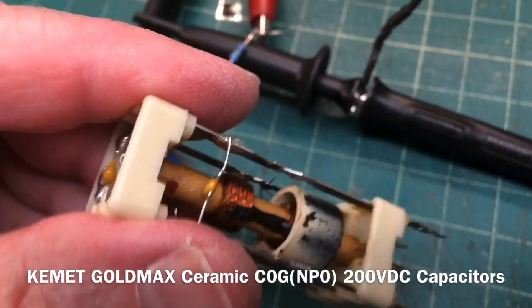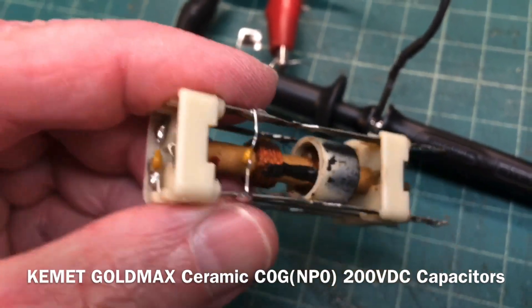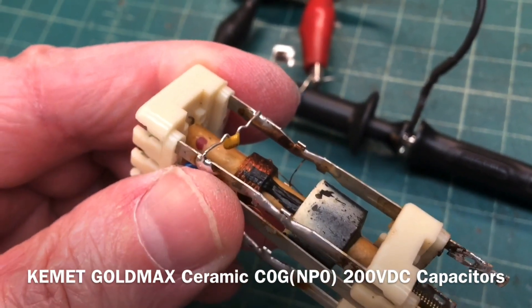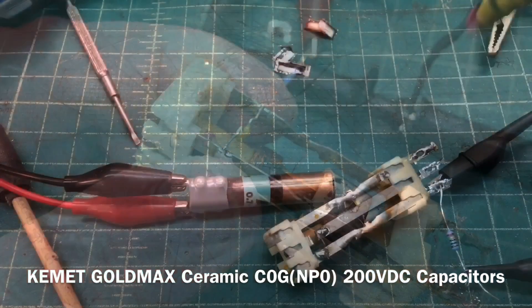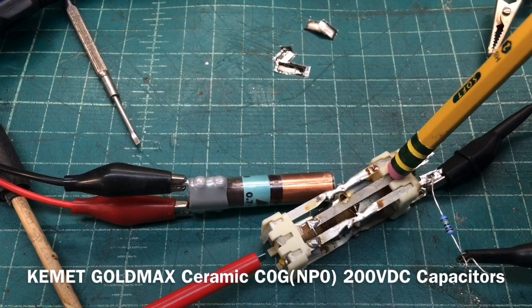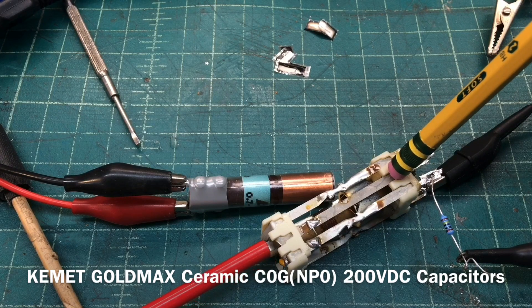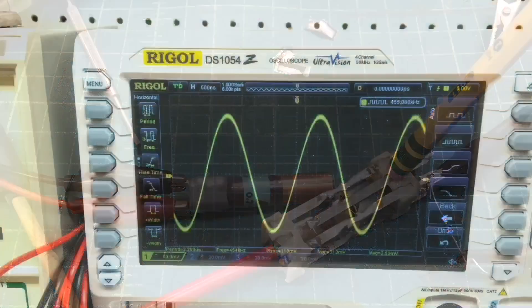So you can see there the new capacitors in place, where the secondary side 106 picofarad was called out. I went back with 100 picofarad. And on the primary side, I doubled up 100 picofarad and a 27 picofarad. And the original design was 131 picofarad. Everything seems to be resonating well.